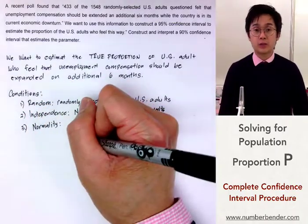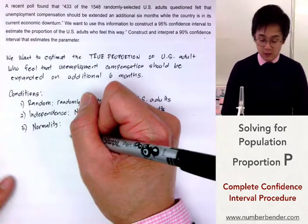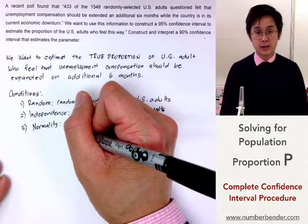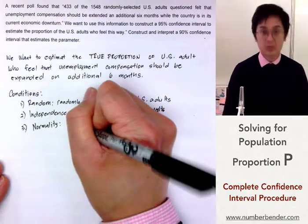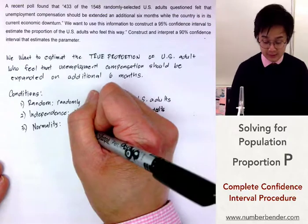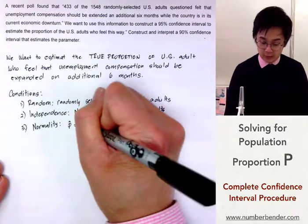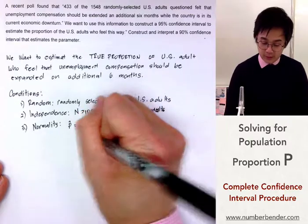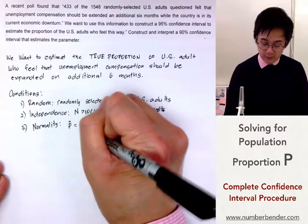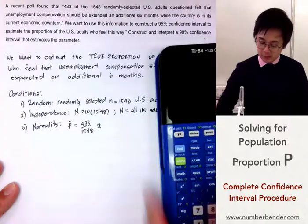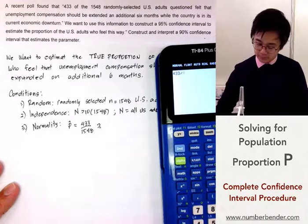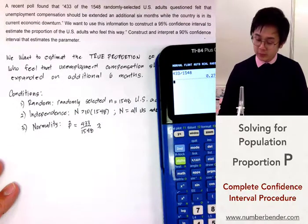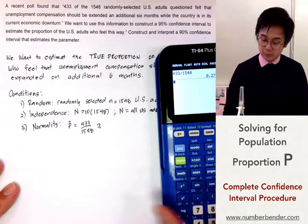For normality, we're going to be using the law of large counts, or Np greater than or equal to 10, and Nq greater than or equal to 10. Let's establish what p-hat is, because we're going to be using our p-hat in this condition. p-hat is going to be 433 divided by 1,548, which is approximately equal to 0.2797, so let's put 0.28.